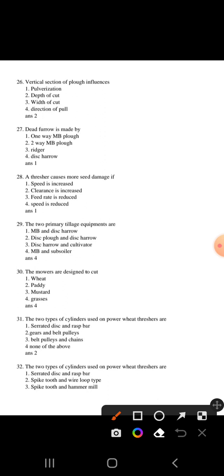Question 29: Two primary tillage equipment are moldboard plow and subsoiler - this is correct. Question 30: Mowers are designed to cut grass and weeds - motorcycles is the answer.